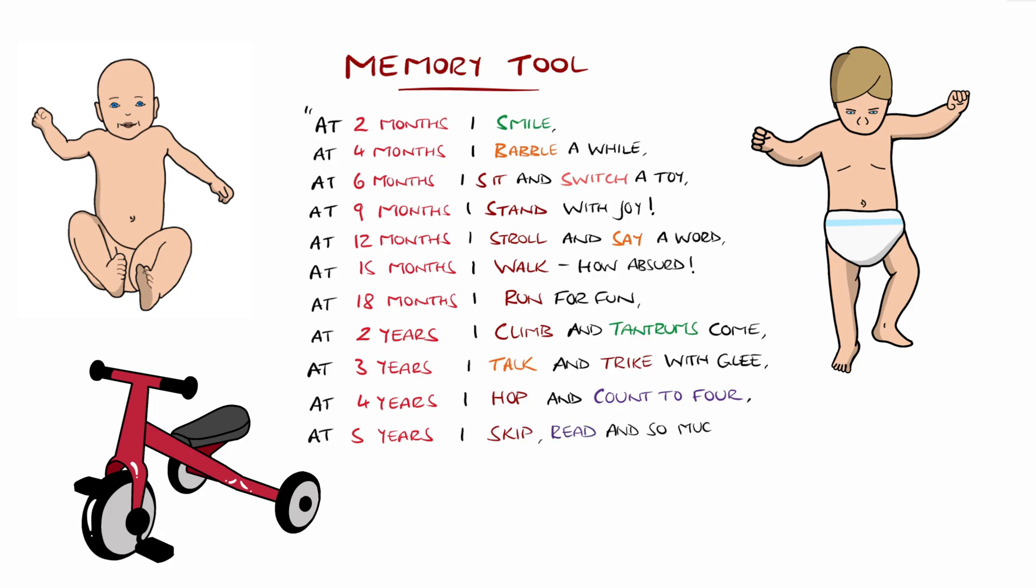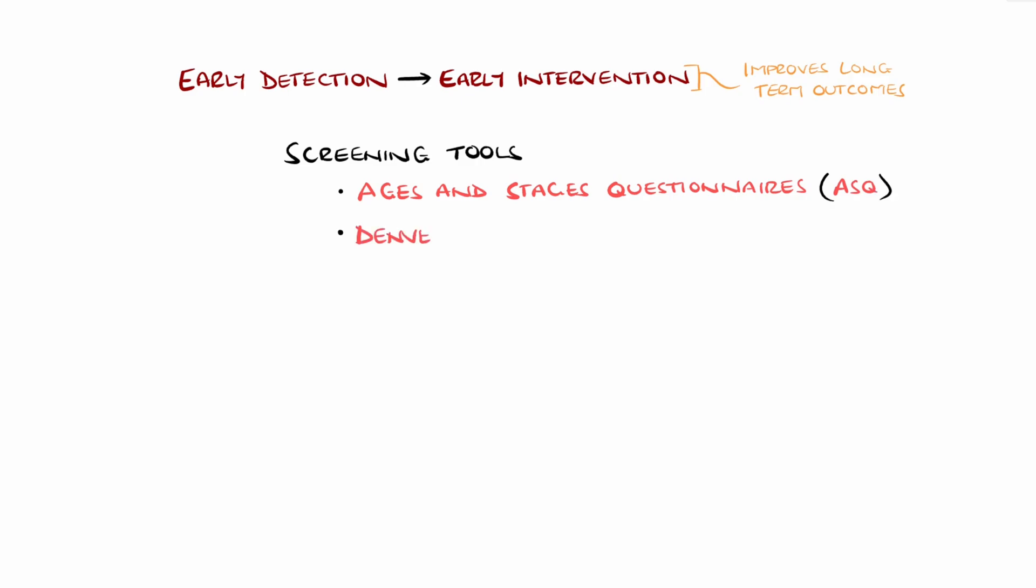The importance of developmental screening lies in early detection, allowing for early intervention which improves long-term outcomes, particularly in neurodevelopmental disorders. Screening tools that can be utilized to screen for some of these milestones include the Ages and Stages Questionnaires, the Denver Developmental Screening Test, and the Modified Checklist for Autism in Toddlers.